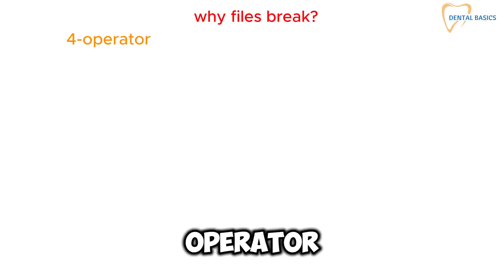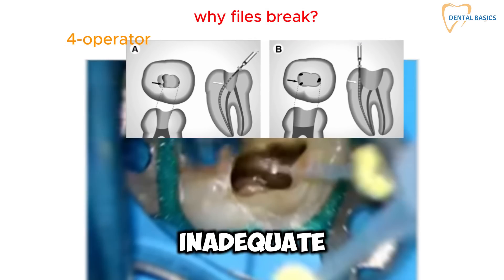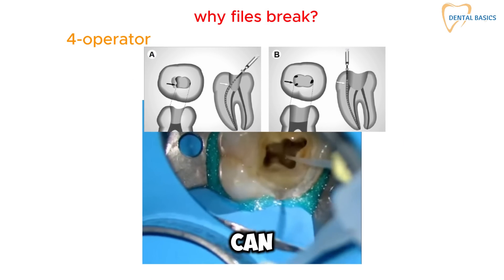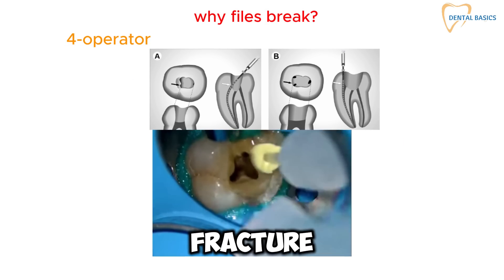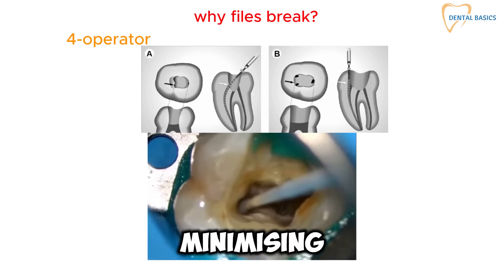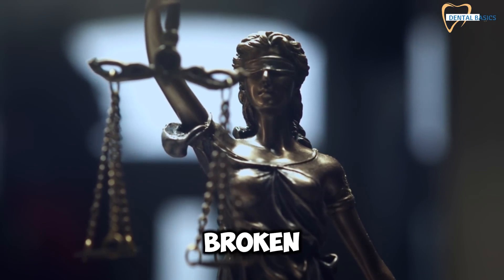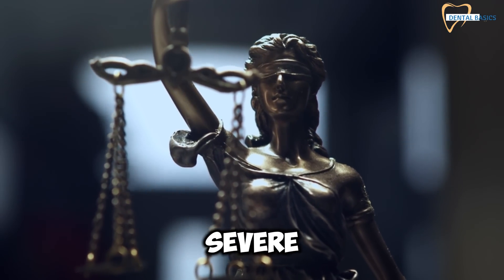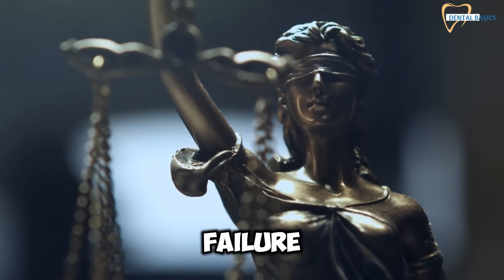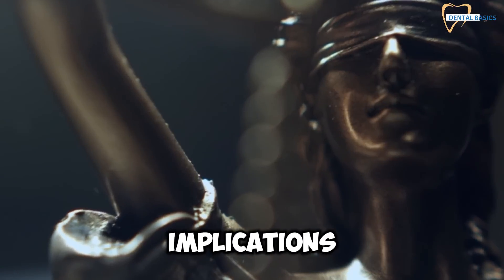Operator error is a critical factor in preventing file breakage. Excessive force, improper angulation, and inadequate irrigation can all contribute to file fracture. Proper training and experience are essential for minimizing the risk of breakage. The consequences of a broken file can be severe, including treatment failure, patient discomfort, and potential legal implications.